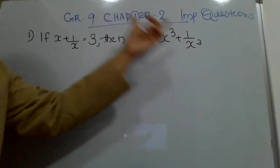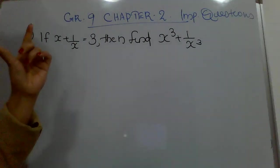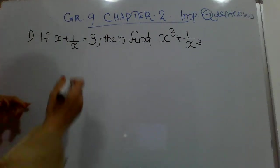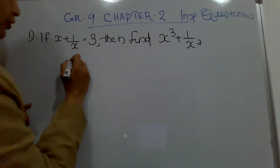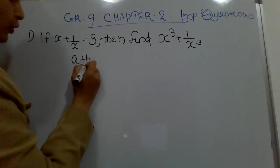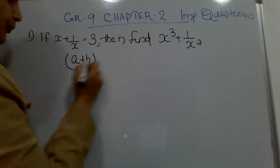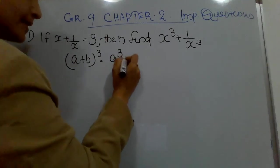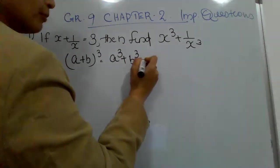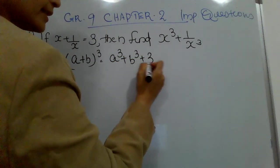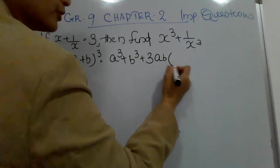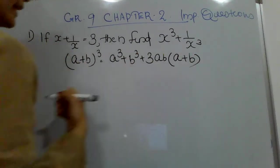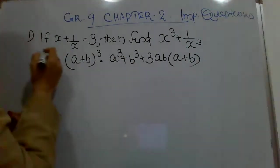To solve this, you have to remember the identity: (a + b)³. What is (a + b)³? It equals a³ + b³ + 3ab(a + b).